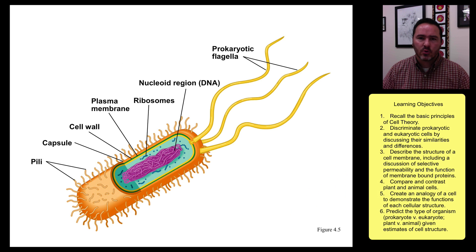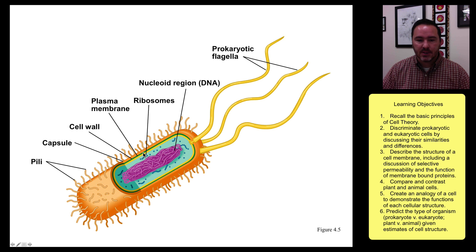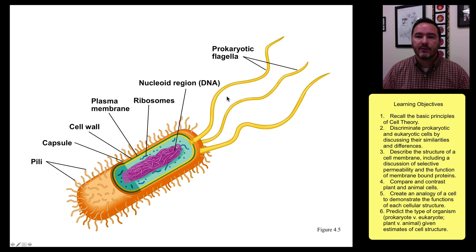Here's a quick cartoon of a prokaryotic cell with some of the parts that it could have. All of them have a plasma membrane, a nucleoid region, and ribosomes, but they also can have cell walls, capsules, pili, and flagella as well.